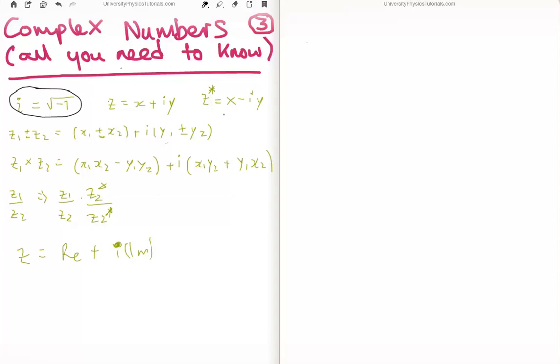And in order to get its complex conjugate you change the sign on the complex or imaginary component. In order to add two complex numbers we do this. In order to multiply two complex numbers we do this. And in order to divide two complex numbers the procedure is that we multiply above and below by the complex conjugate of the denominator. And finally the most general way to look at an imaginary number is that it exists as a real component plus i times the imaginary component.